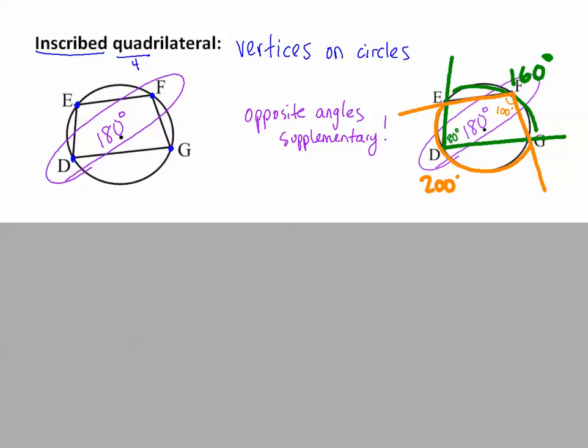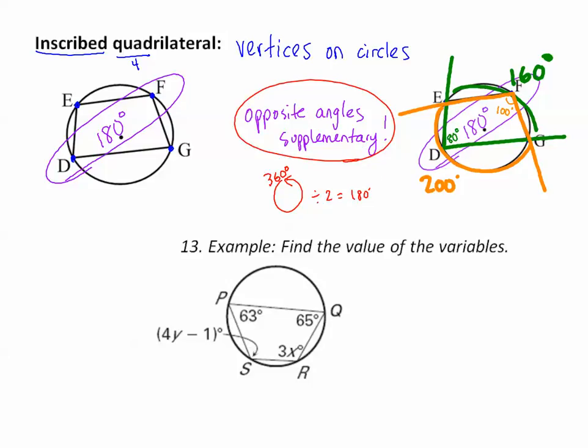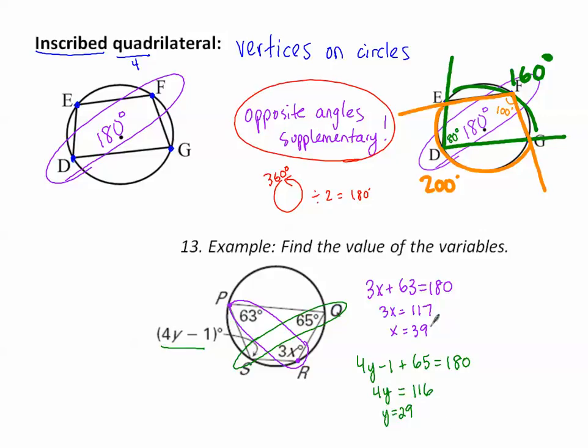Or we can think of it that the whole way around the circle is 360. So half of that is 180. The opposite angles are supplementary. Make sure you're only doing that for when it's in a circle. So if I want to know what X is, I look what's opposite to that angle. So 3X plus 63 equals 180. And opposite angles, 4Y minus 1 plus 65 equals 180. So solved properly, X is 39 and Y is 29. Thank you.